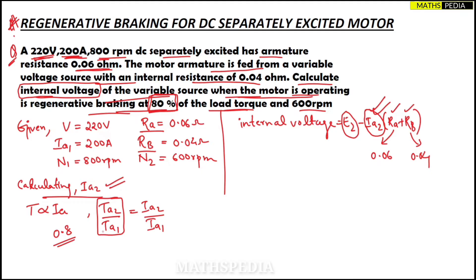So I can write 0.8 = Ia2/Ia1. Ia1 is given in the question which is 200 amps.